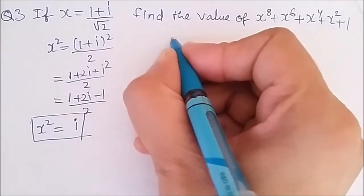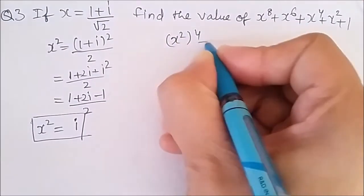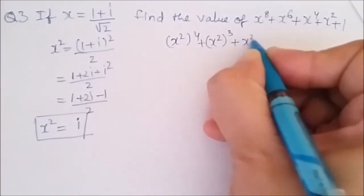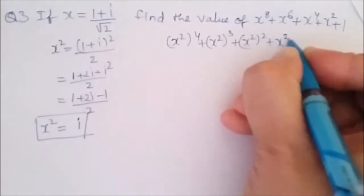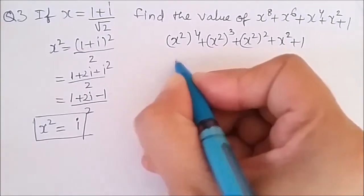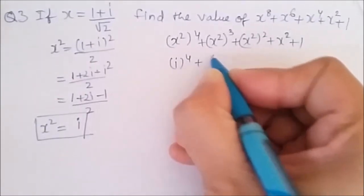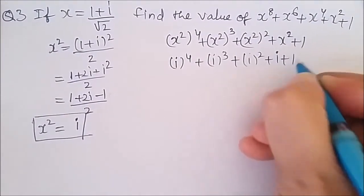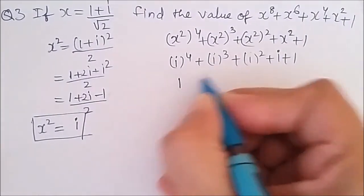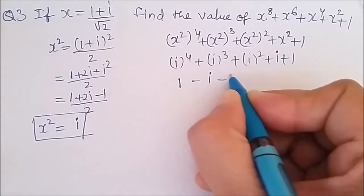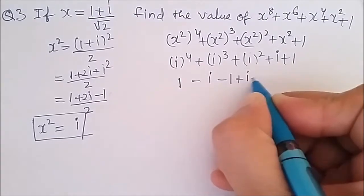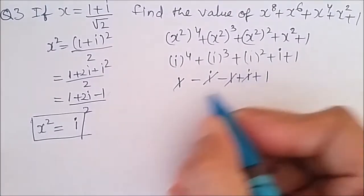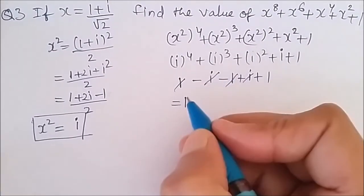x to the power 8 can be written as (x square) to the power 4, x to the power 6 as (x square) to the power 3, and so on. Substituting x square equals i: this becomes i to the power 4 plus i to the power 3 plus i square plus i plus 1. Since i to the power 4 equals 1, i cube equals minus i, and i square equals minus 1, we have 1 minus i minus 1 plus i plus 1. The 1 and minus 1 cancel, and minus i and plus i cancel, leaving 1. That is the answer.